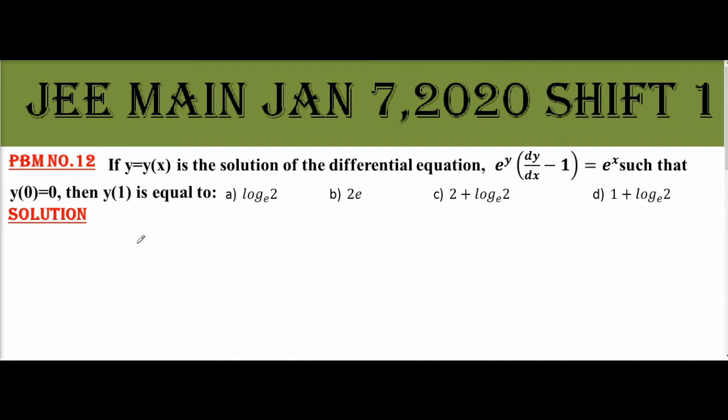One differential equation is e power y into dy by dx minus 1 equal to e power x. If y equal to y of x is the solution of the given differential equation. Now what are the conditions given? The conditions given are y of 0 equal to 0. And you are asked to find what is y of 1.